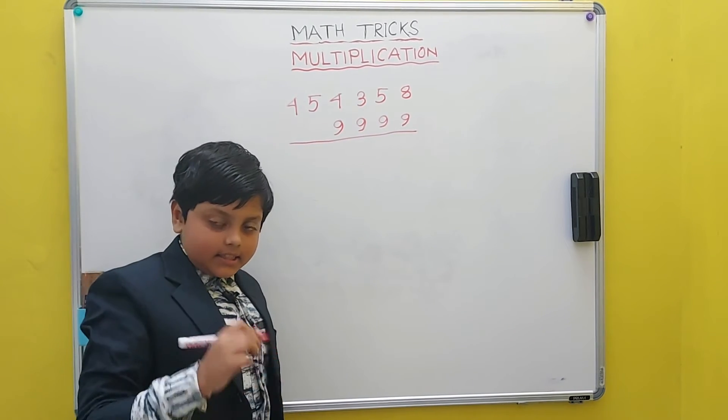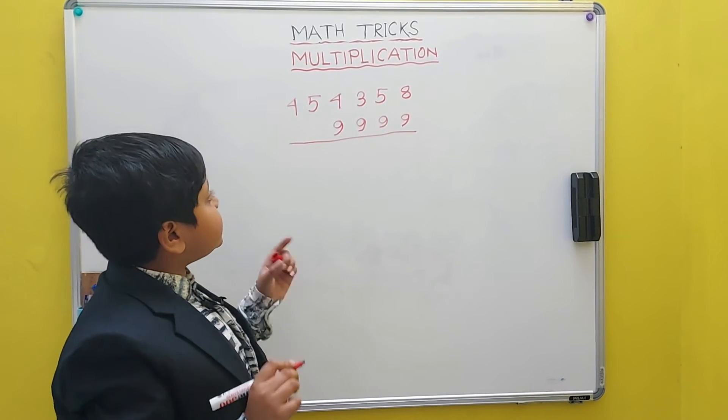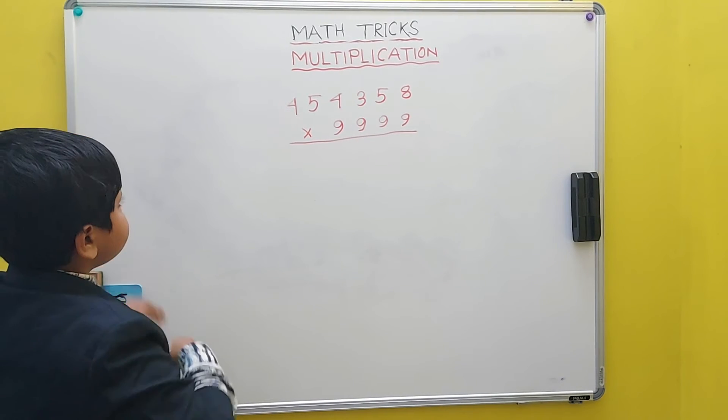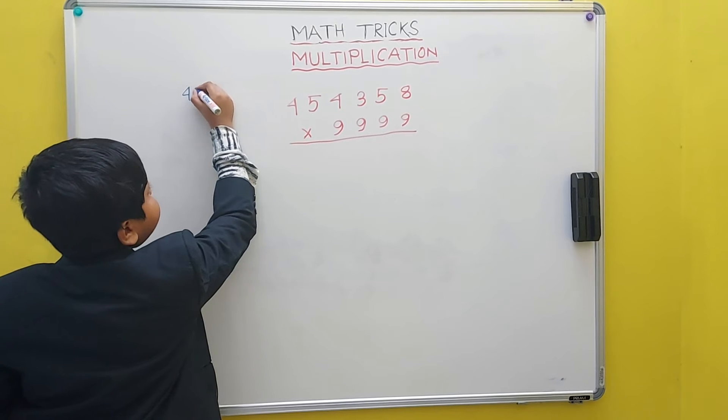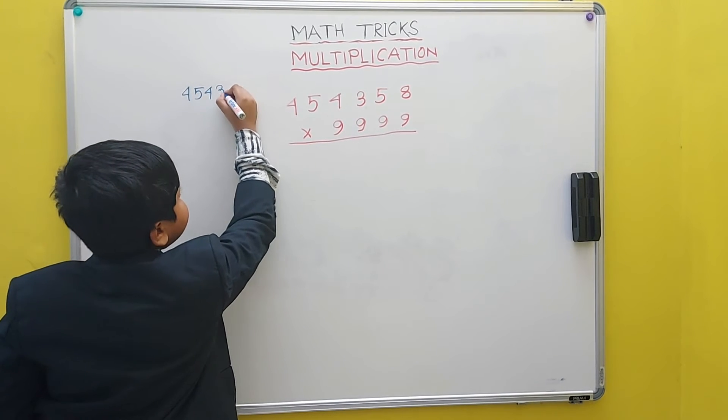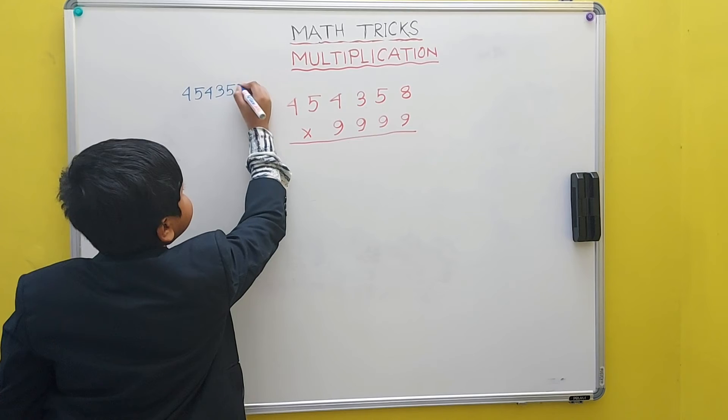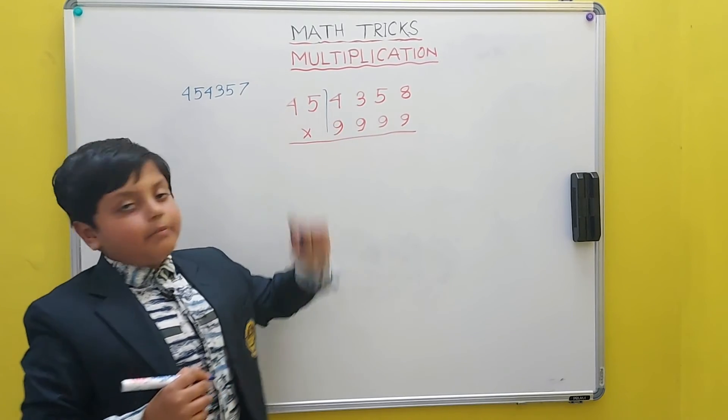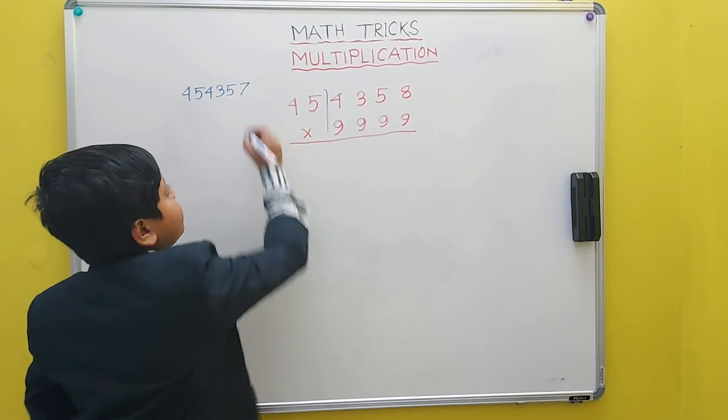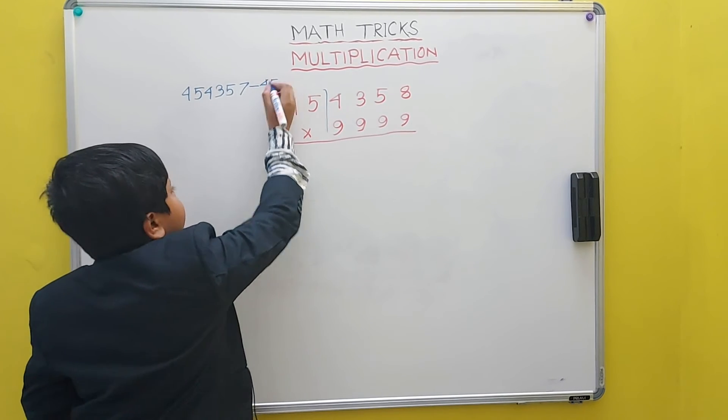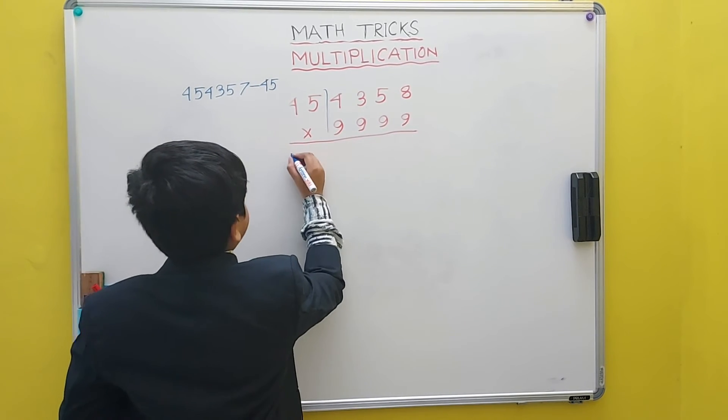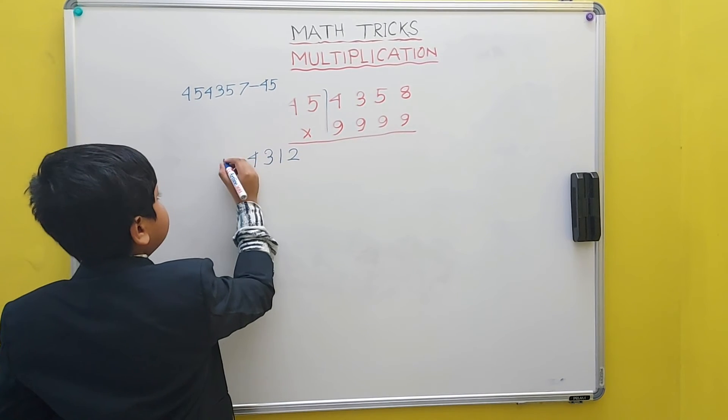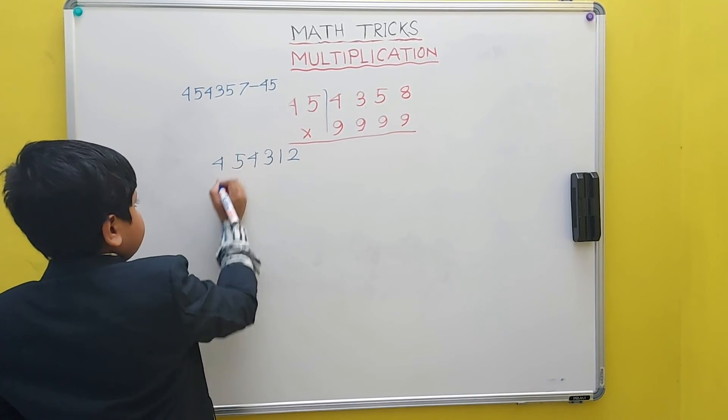As I said, we have to firstly take the predecessor of this number which becomes 454357. Now, we have to take this extra number that was left over from the division, 45 and subtract it. And now, we will write it here. This is the number.